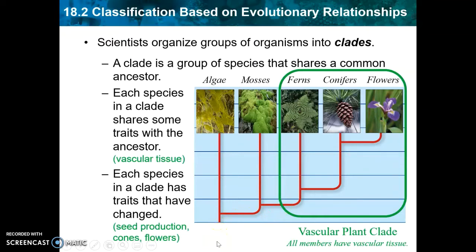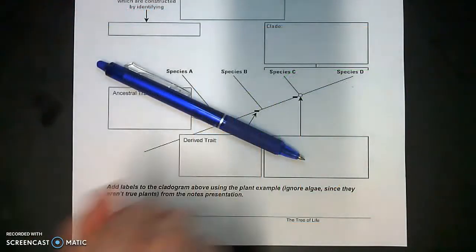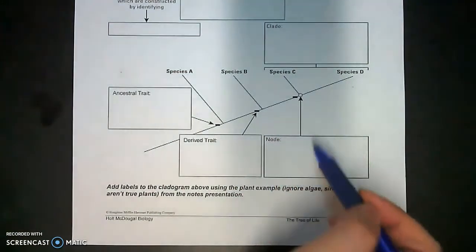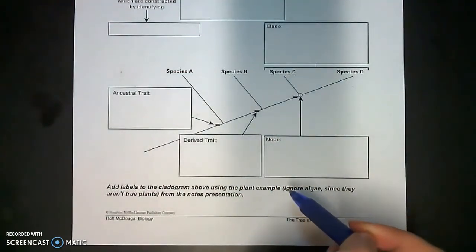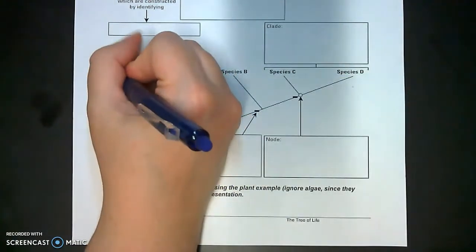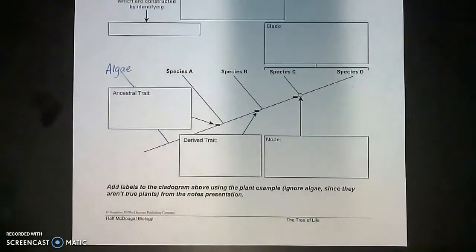We have algae, mosses, ferns, conifers, and flowers, and we can add information to this cladogram to see how they're related. You also have a place to label this on your power notes. Here is the cladogram from your power notes — notice it just has four species and tells you to ignore algae since they aren't true plants. But if you wanted to add algae, it would go right behind the box for ancestral trait. You can put it right there, and then it matches the one from the notes.